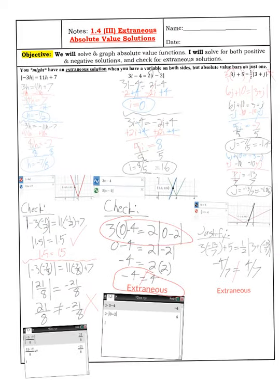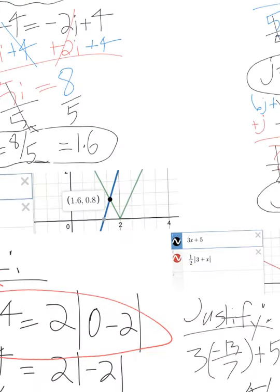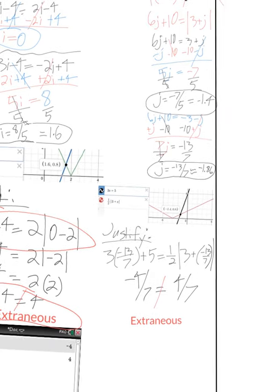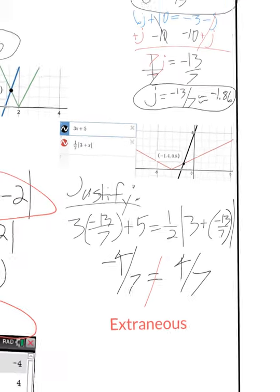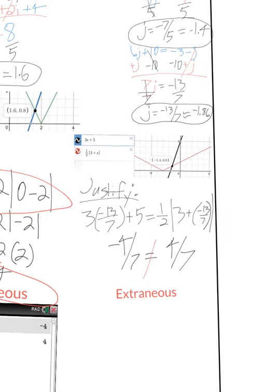Before I close: you're not always going to have an extraneous solution when you have a variable on both sides with absolute value bars on just one. If the line intersects the absolute value graph twice, you can still get two valid solutions. I encourage you to look at the graph to see if you need to justify whether one solution is extraneous, because the graph will show you how many times they intersect. Thanks for watching. Goodbye.